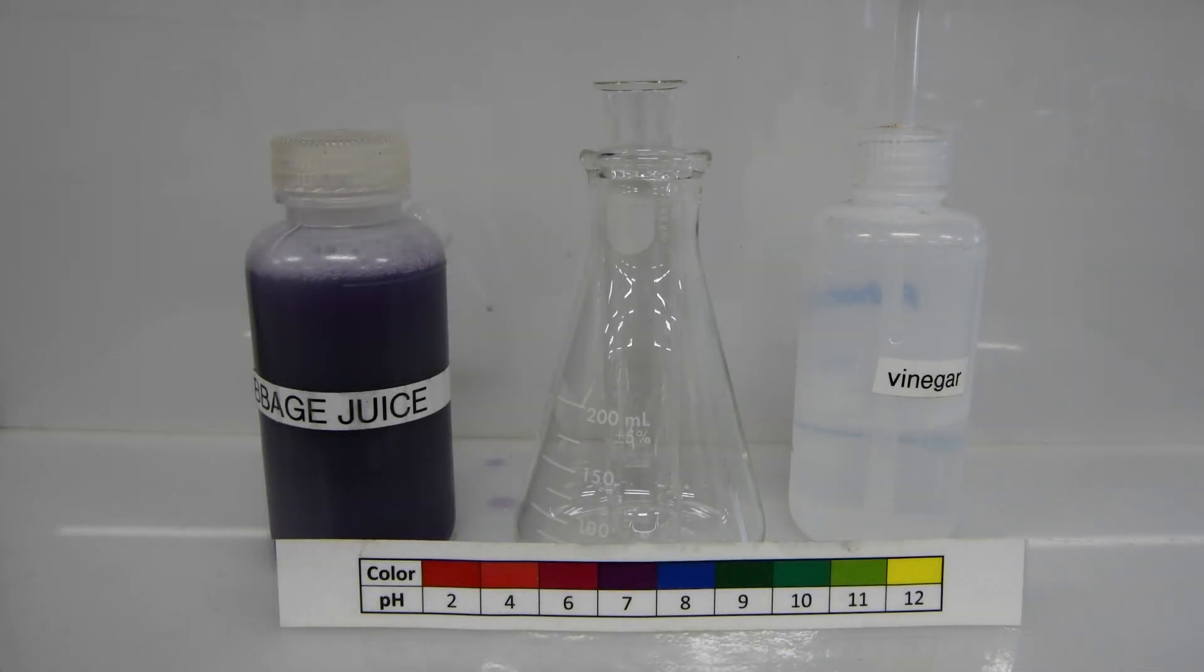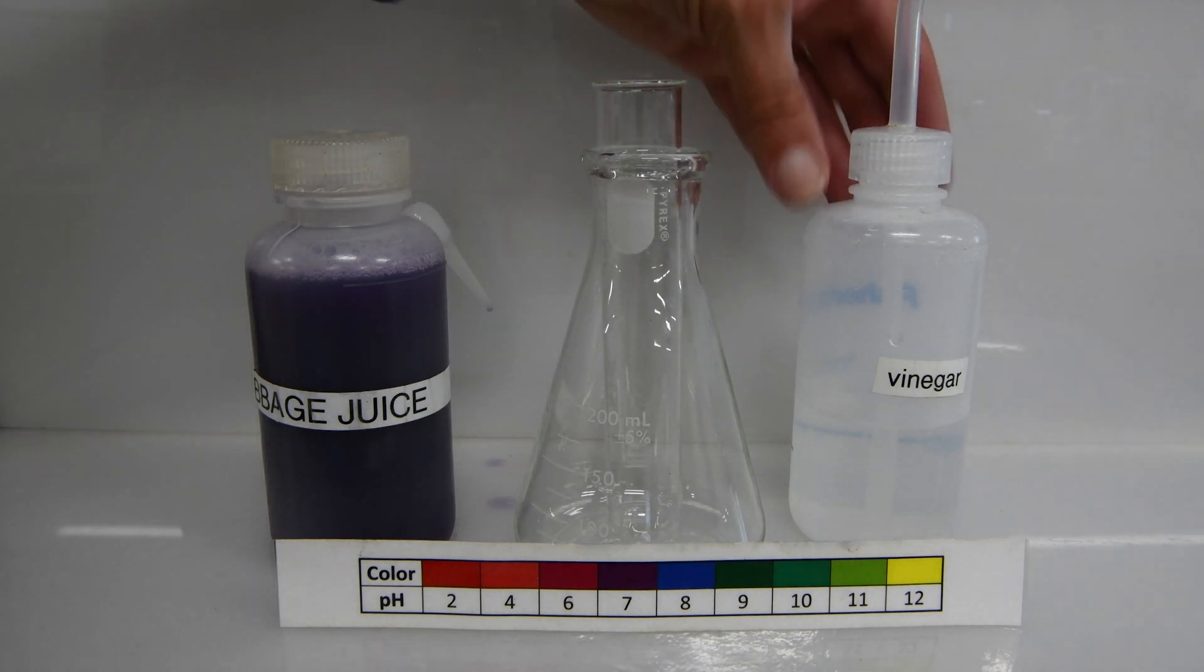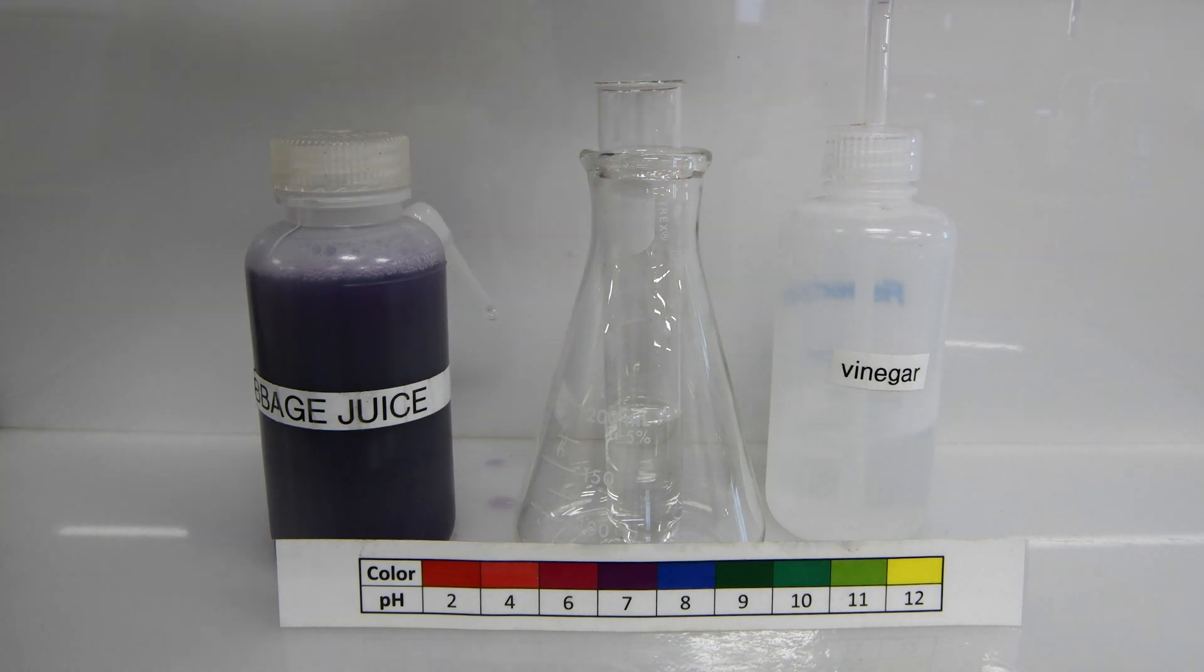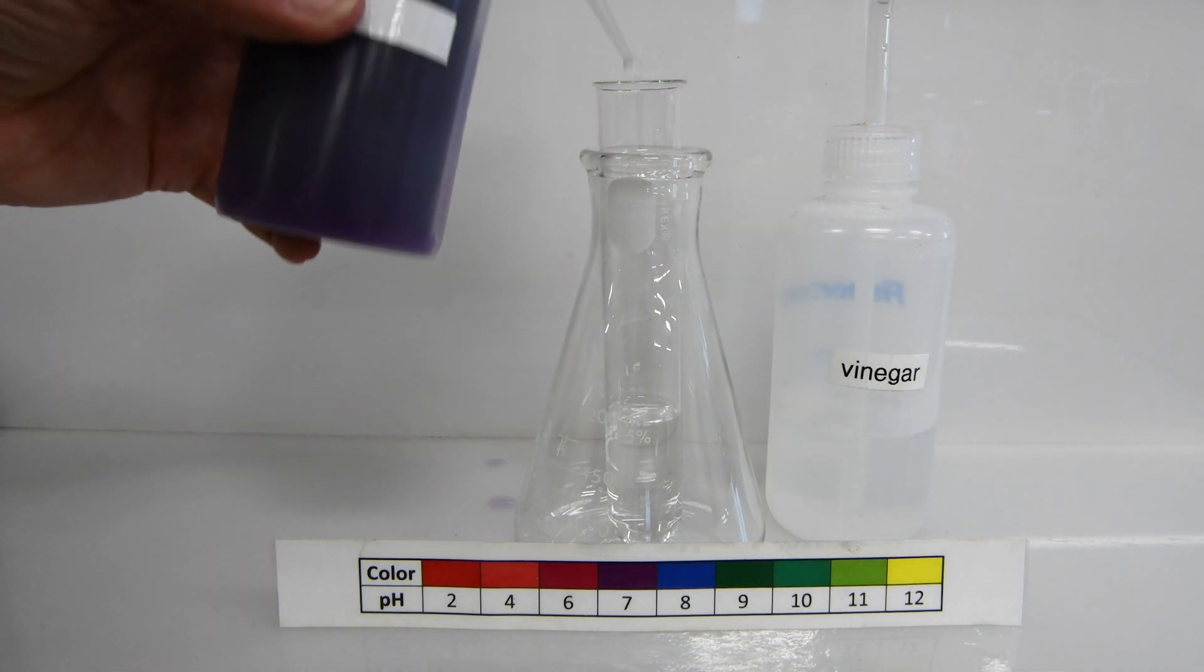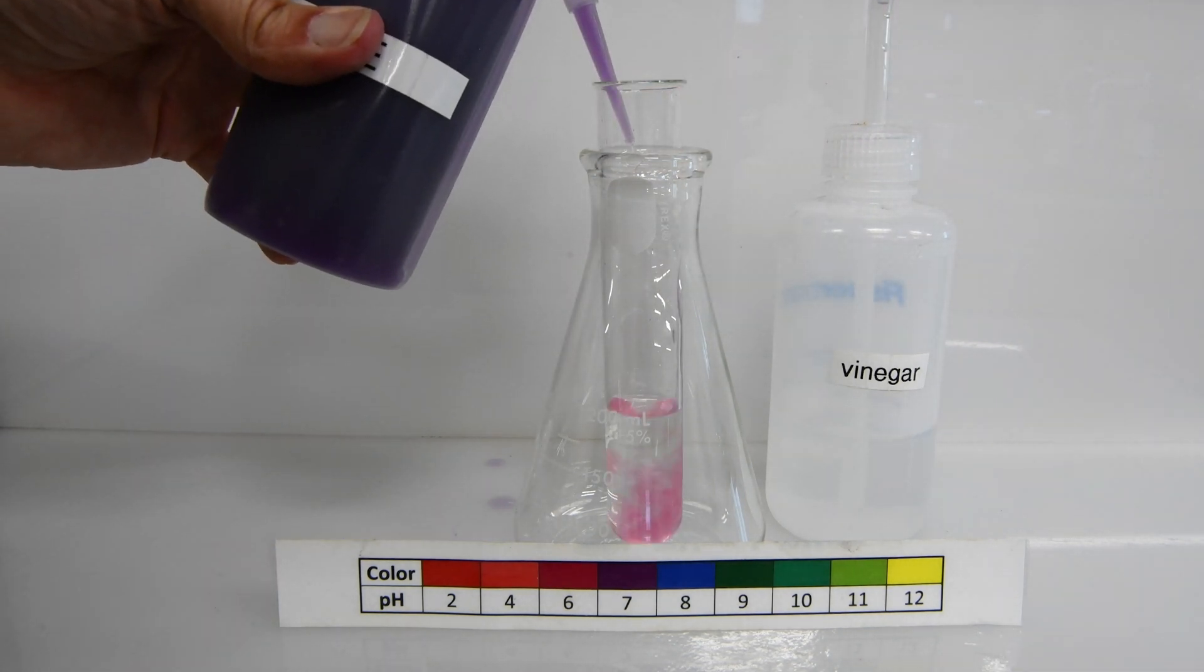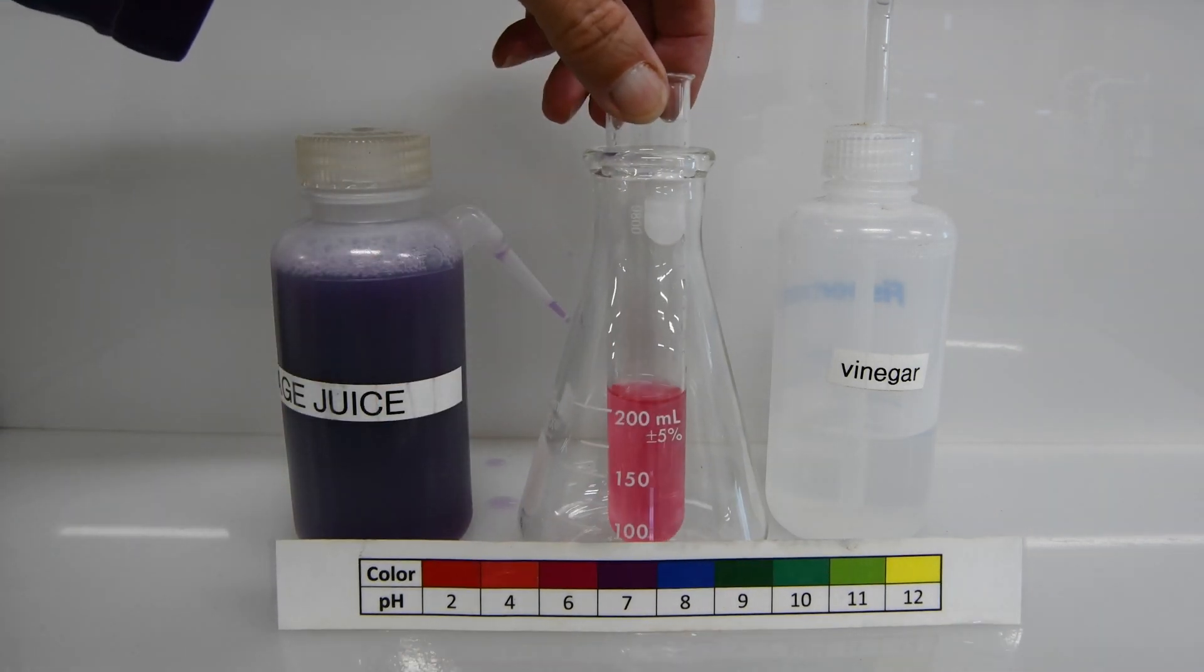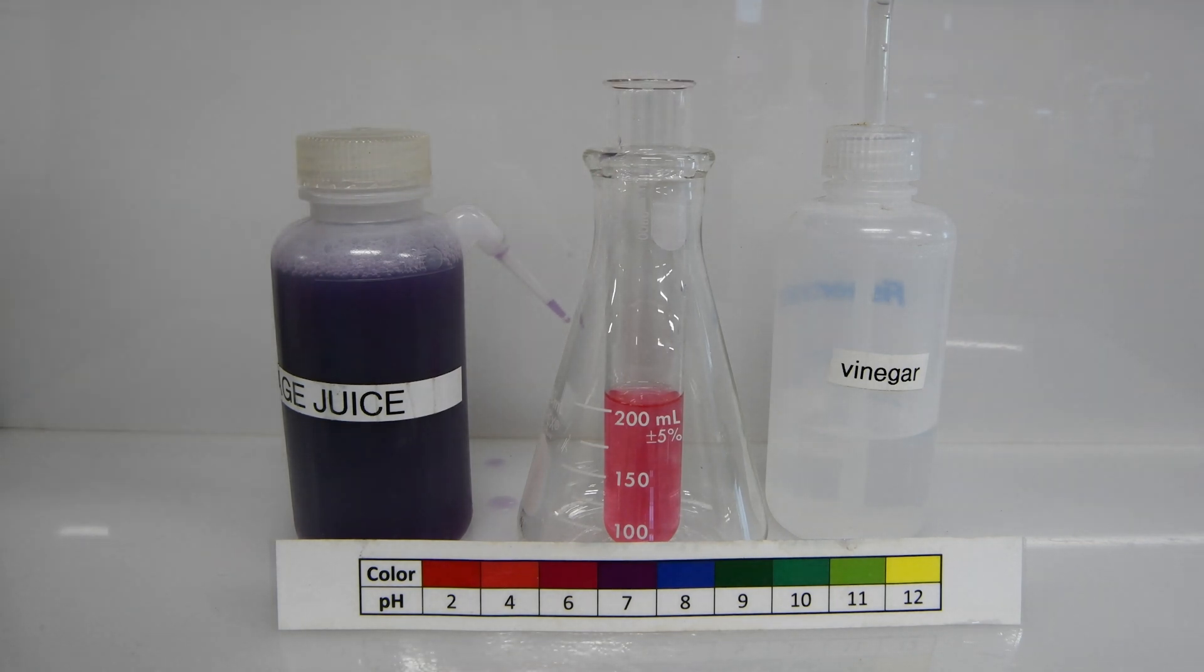Next let's take a look at vinegar. So we'll add a sample of vinegar to our test tube. And then a squirt of cabbage juice. And it looks like we're getting a lovely red color again. So use the color chart and come up with your best estimate for the pH.